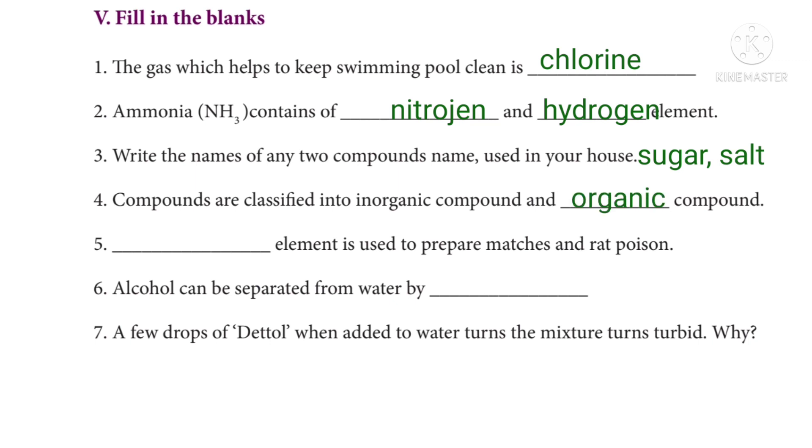Fifth question: dash element is used to prepare matches and rat poison. Answer: phosphorus. Sixth question: alcohol can be separated from water by fractional distillation.